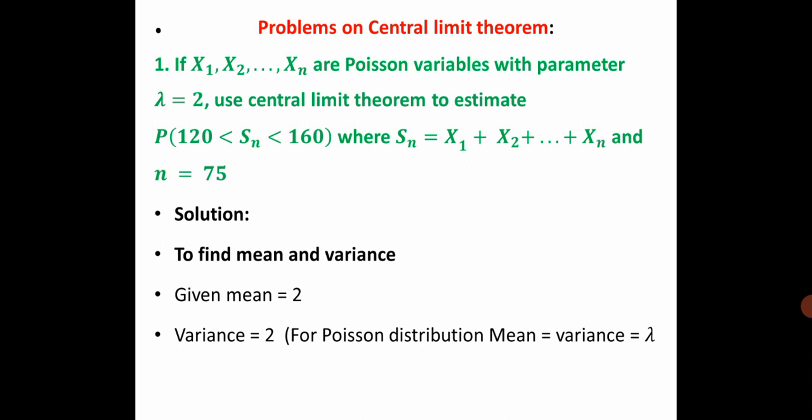Let us start the solution. Mean and Variance: first of all, we have to write the mean and variance. The question mentions a Poisson variable. In the Poisson distribution, mean equals variance equals lambda. Therefore, from the given lambda value, we can easily write the mean and variance. Therefore, mean equals 2 and variance equals 2.